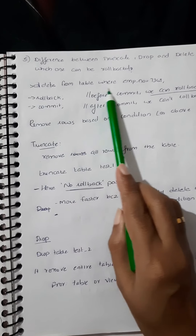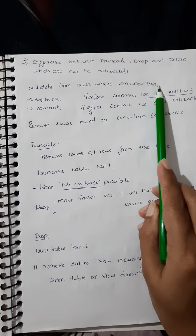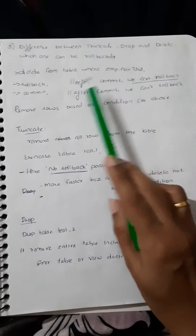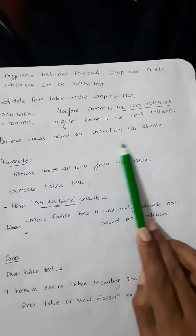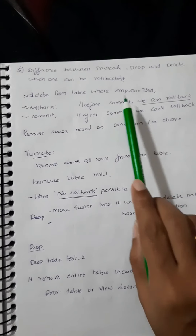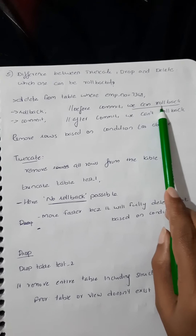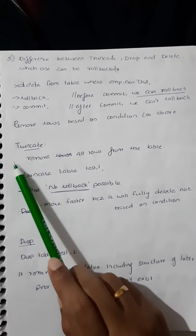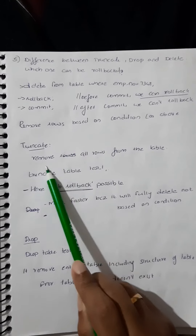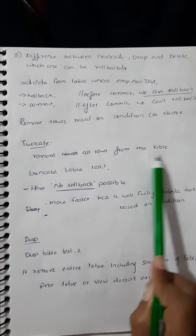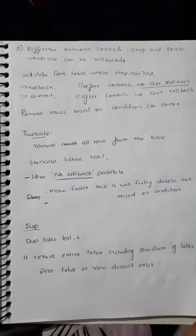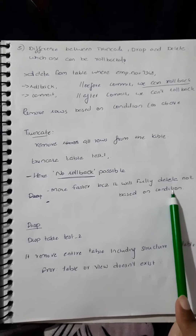We will return to truncate, drop, and delete. The value of the delete is based on the delete operation. It will return to the commit and then rollback.